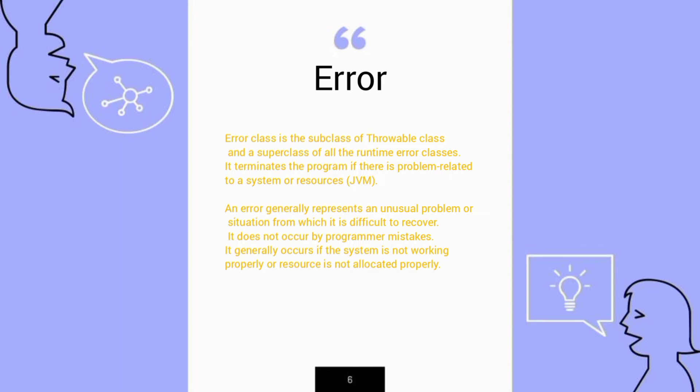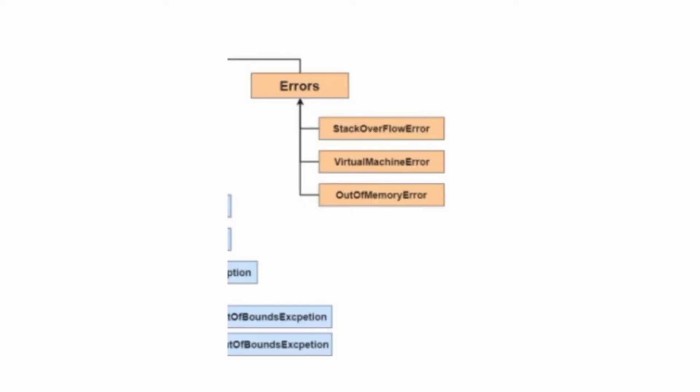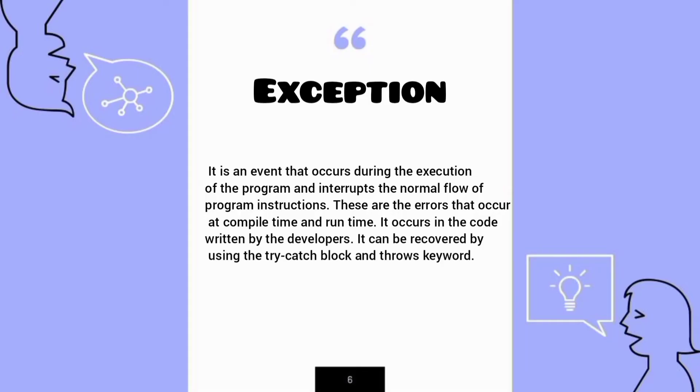Exception is an event that occurs during the execution of the program and interrupts the normal flow of program instructions. These are the errors that occur at compile time and runtime. It occurs in the code written by developers and can be recovered by using try-catch blocks and throws keywords.